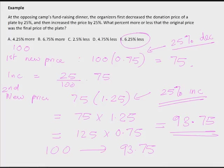Interesting — it did not matter whether the price went up first by 25% and then came down by 25%, or it went down by 25% first and then came up by 25%. The final result is always the same.